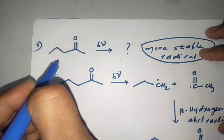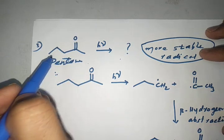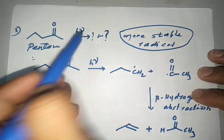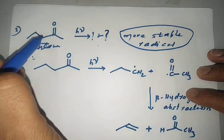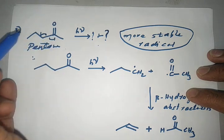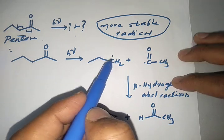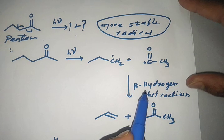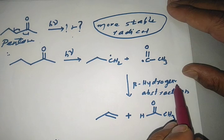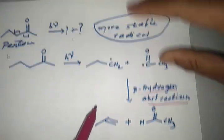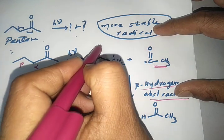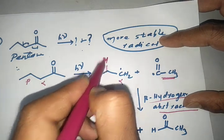Let us take another important example: pentan-2-one, a symmetrical ketone. The more stable radical determines which bond breaks. The bond on this side undergoes cleavage, forming an n-propyl radical and an acyl radical — this is the primary process. In the secondary process, beta hydrogen abstraction takes place. The acyl group abstracts beta hydrogen from the alpha carbon. We can identify the alpha carbon and beta carbon with beta hydrogens present.